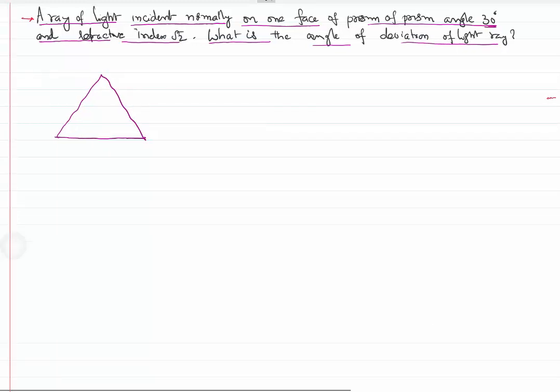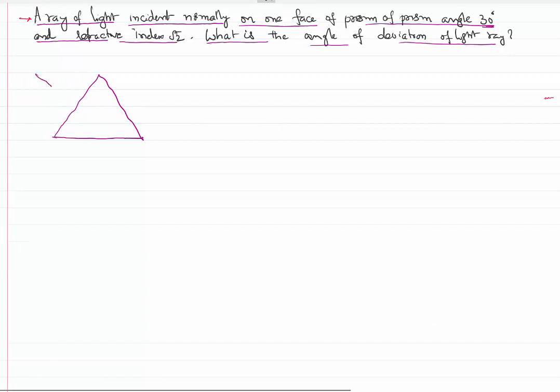So let us try to draw a small diagram. This is the prism. The incident light ray is normal to the prism. This is the normal and this itself is the light ray. So what we can say is the angle of incidence on the first face is equal to zero.